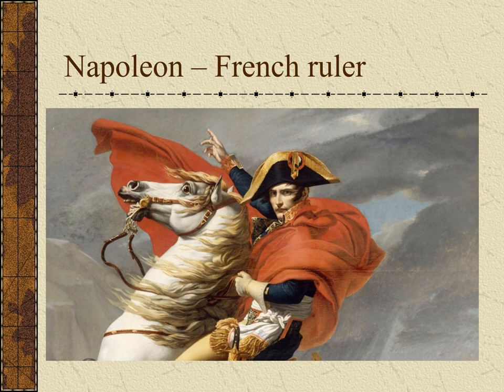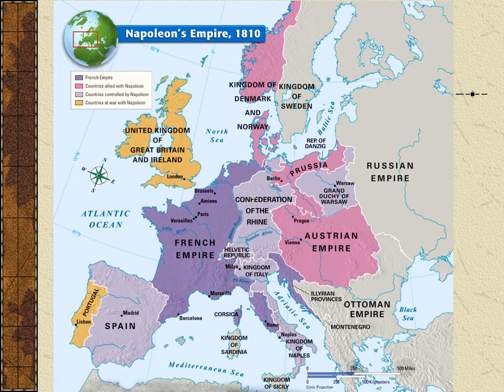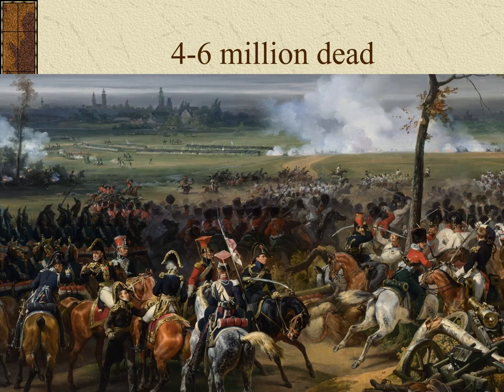Napoleon began to take over all of Europe, and his plan was eventually to take over the entire world. His biggest mistake was trying to invade Russia — the same mistake Hitler would make over 100 years later. Note to self: if you become a dictator, don't invade Russia. Millions ultimately died because of the Napoleonic Wars. We Americans forget — the only reason we beat England in the War of 1812 is because England was fighting Napoleon at the same time.